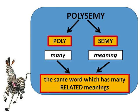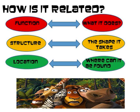Polysemy is the same word which has many related meanings. You got it right, Alex. What do you mean by 'related'? Related in terms of function, structure, and location. As long as it is related either by function, structure, or location, the word is considered polysemy. It does not have to be related by all three aspects — it can take either one or two aspects.